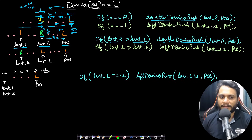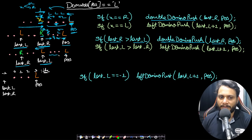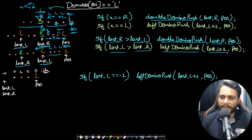If last_L is greater than last_R, the nearest previously-seen forced domino was pushed left. This means everything from last_L + 1 to the current position will be filled with L values, because pushing left causes all intermediate dominoes to also fall left. So when last_L > last_R we call left_domino_push from last_L + 1 to position.